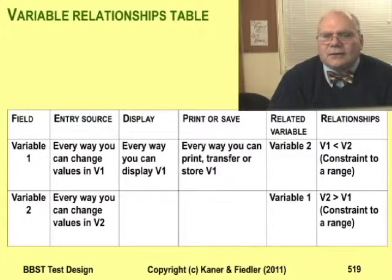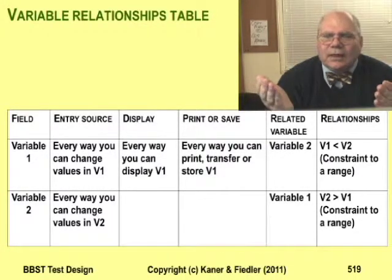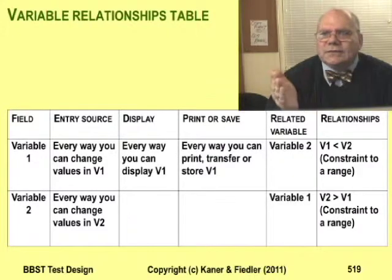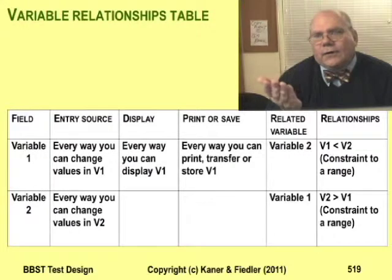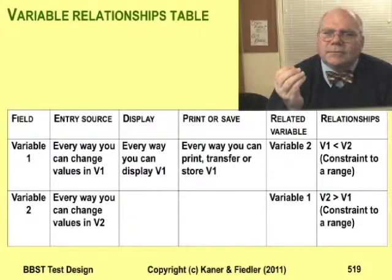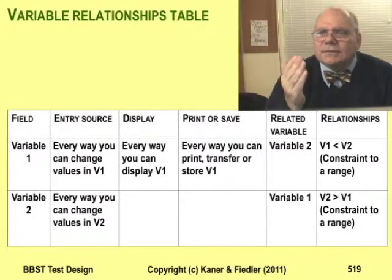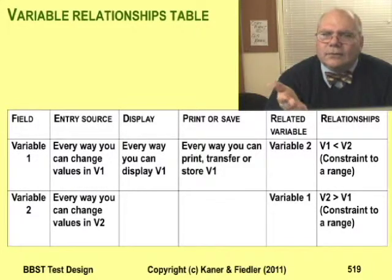Let's consider a hypothetical example. We've got variable 1 and variable 2, and suppose the program operates on these together. In particular, suppose that the program forces variable 1 to always be less than variable 2. To work with this in a table, start with the first variable. The columns of the table start with the ways that you can enter values into variable 1 — for example, you can probably type data into the variable, type data first and then edit it later, read the variable's value from a file, or have the program overwrite the value with a calculated result. List each way that this variable's values can be set.